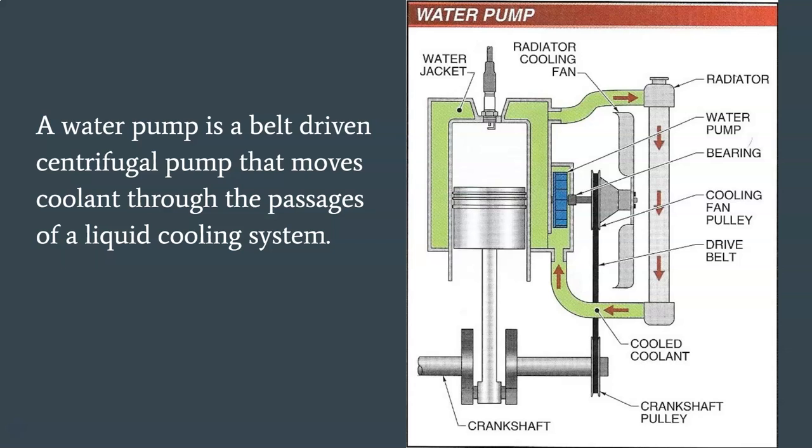A water pump is a belt-driven centrifugal pump that moves coolant through the passages of a liquid cooling system. A radiator is a multi-channel container that allows air to pass around the channels to remove heat from the liquid within. Thin metal fins on the radiator channels increase the surface area in contact with cooling air to improve heat transfer efficiency. An inlet and outlet allow the passage of coolant to and from the engine. Hotter coolant flows in through the top inlet; cooler coolant flows to the engine through the bottom inlet. The radiator also serves as a coolant reservoir via the top and bottom tanks.